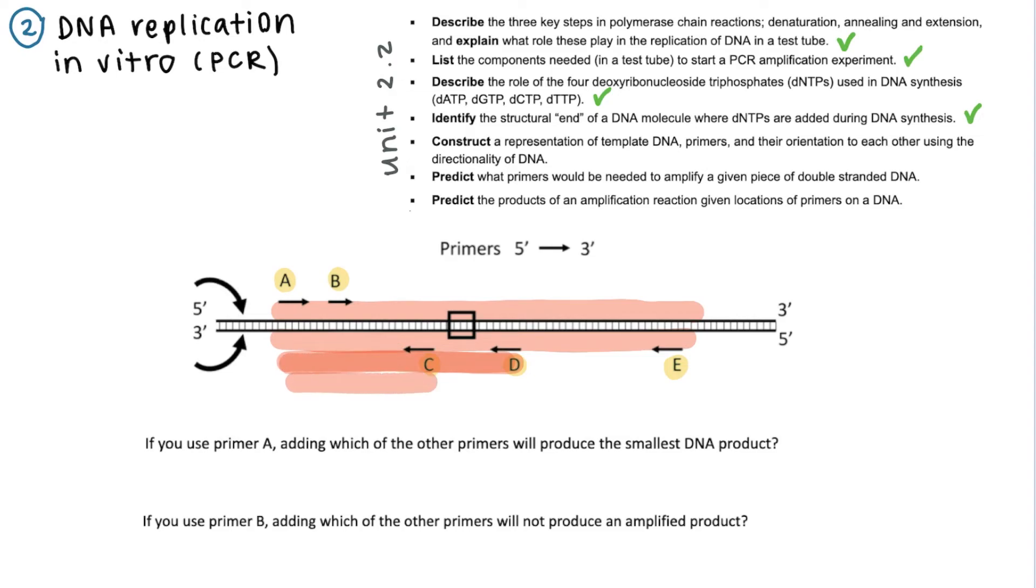Here we can see that if you use primers A and C, you will yield the smallest possible DNA product.